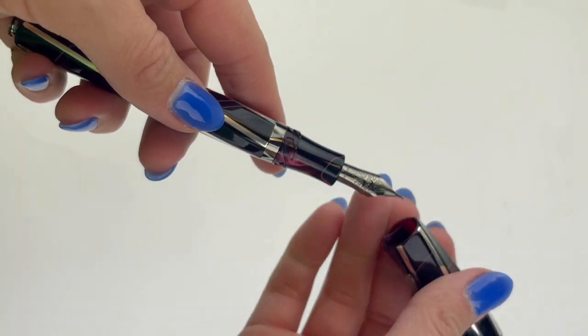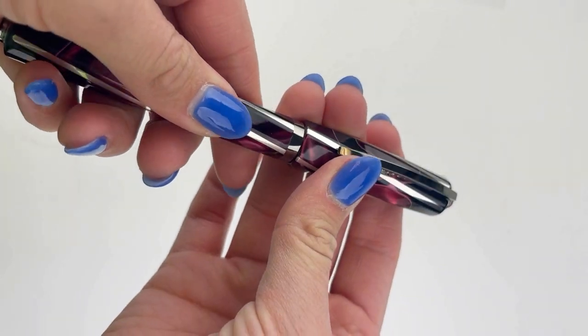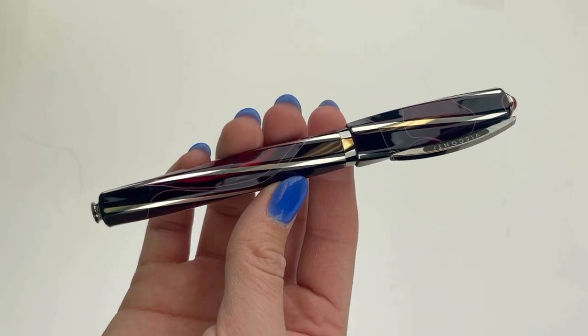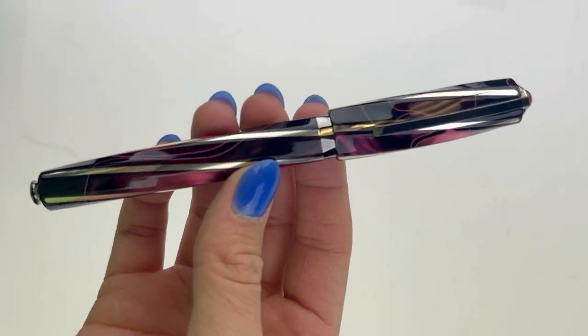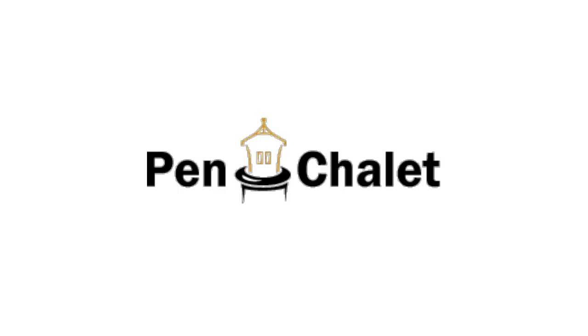You have red carnelian stone in the finial there. You also have the pen's sterling silver threads that are applied by hand one by one along those twisting edges of the pen design. The pen's finished with sterling silver and ruthenium-plated trim and it's limited to 50 pieces. Visit penchalet.com for more info.